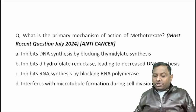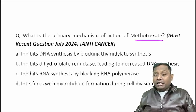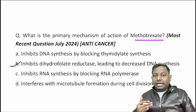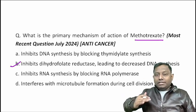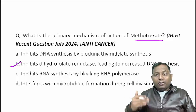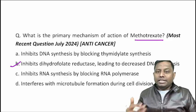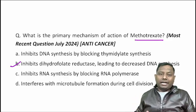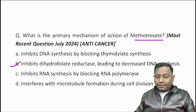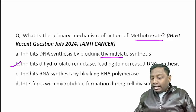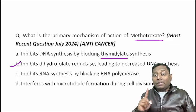Question: what is the primary mechanism of action of Methotrexate? Methotrexate inhibits dihydrofolate reductase (DHFR), which leads to decreased purines and pyrimidines — the building blocks of DNA. Inhibiting DHFR prevents formation of tetrahydrofolic acid. Another option given is: inhibits DNA synthesis by blocking thymidylate synthase.